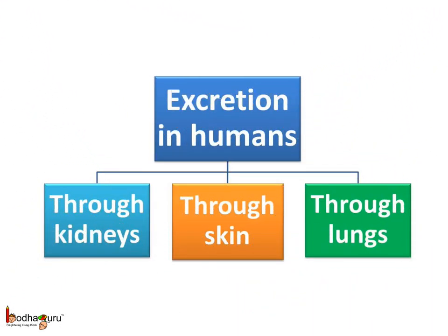To summarize, the different ways in which wastes are excreted in humans: first, through the kidneys in the form of urine; second, through the skin in the form of sweat; and third, through the lungs in the form of exhaled gas, which is carbon dioxide.